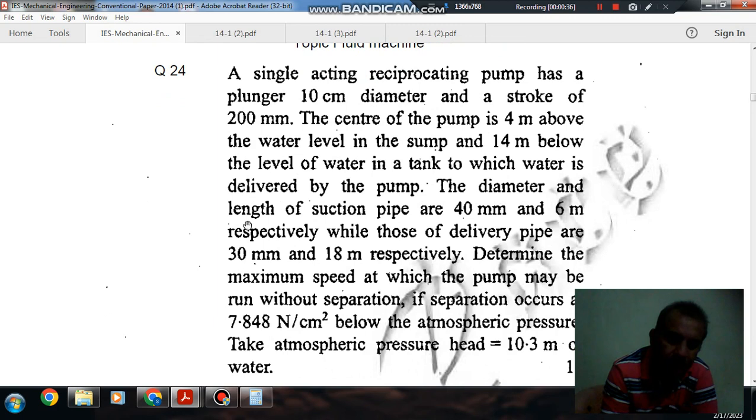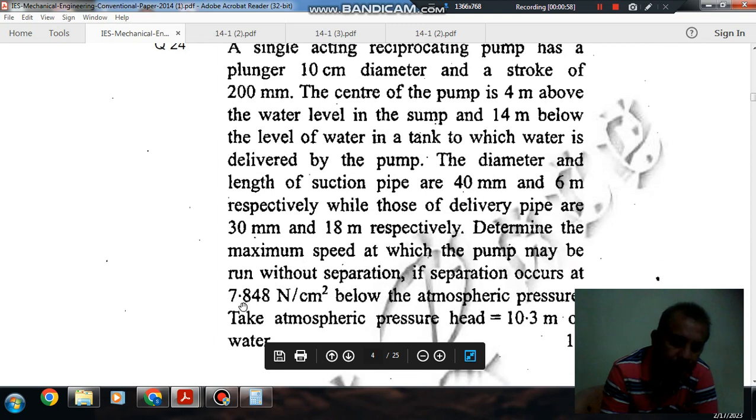The diameter and length of suction pipe are 40 mm and 6 m respectively, while those of delivery pipe are 30 mm and 18 m respectively. Determine the maximum speed at which the pump may run without separation, if separation occurs at 7.848 N/cm².